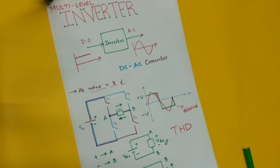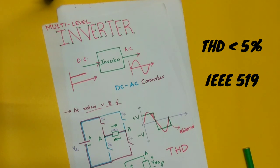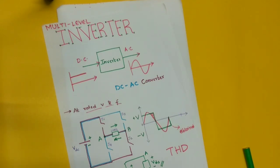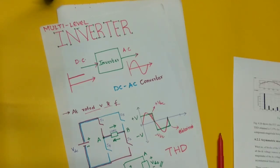According to the IEEE standard, the value of THD must be less than 5% for any topology you select. So before designing any multilevel inverter, the first thing you must keep in mind is that THD must be less than 5% — whatever the cost or complexity of the circuit, everything stands next to the THD value. In order to limit THD to less than 5%, we go for multilevel inverters.